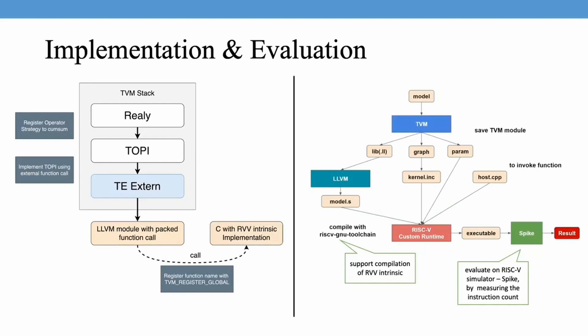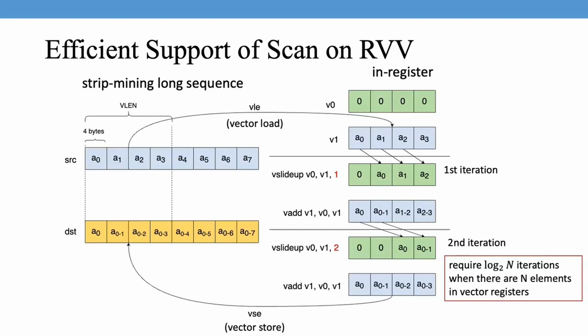We implemented our support of parallel scan on TVM with the external tensor function. The key component is a C-module that computes the parallel scan using RVV intrinsic API. We register this function to an external tensor expression, then wrap it to the accumulated sum operator in the relay layer. We evaluate our implementation by compiling an LLVM module with TVM runtime and executing it on a RISC-V simulator to get the instruction count. We use strip mining technique to handle arbitrary input length, and utilize the V-slide-up instruction in RVV to compute prefix sum within the vector register. The result of the last element is propagated to the next strip mining iteration.